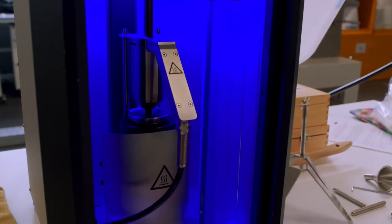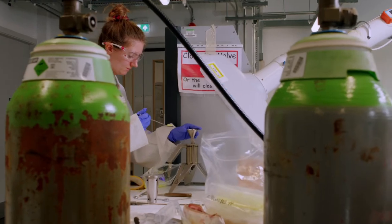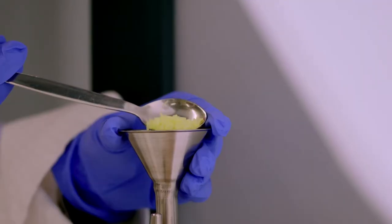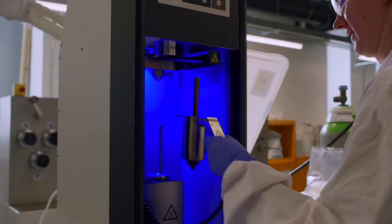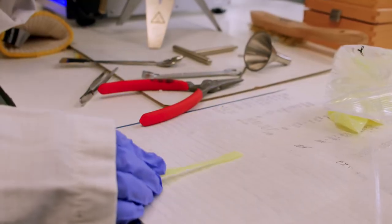We also have our compression molder here. Essentially what we do with that is we can take plastics either output from the extruders or brand new plastic pellets, melt them down and form them into different shapes. And then we can use those for subsequent testing to check out things like mechanical properties, thermal properties as well.